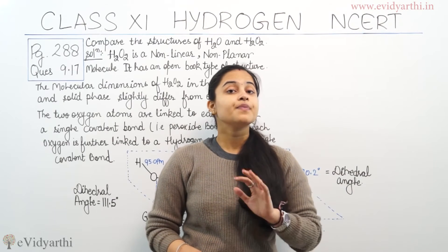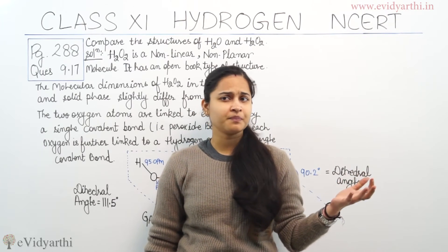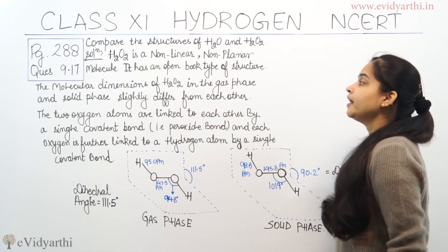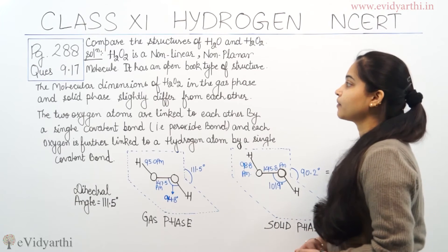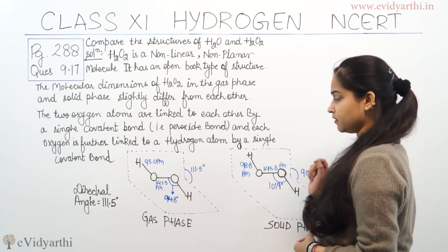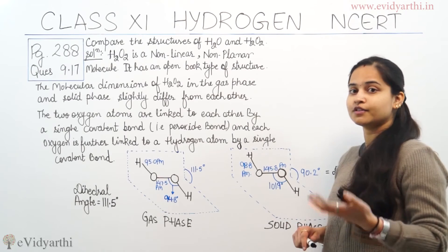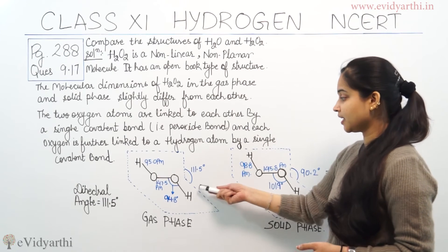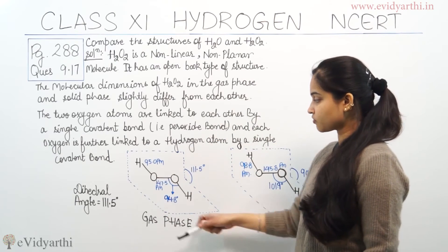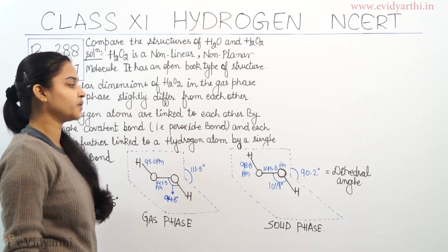In the gaseous phase, the dihedral angle is 111.5 degrees, and in the solid phase the dihedral angle is approximately 90.5 degrees. H2O2 is a non-linear, non-planar molecule with an open-book type structure. The molecular dimensions in the gas phase and solid phase differ slightly. The two oxygen atoms are linked by a single covalent bond — the peroxide bond — and each oxygen is further linked to a hydrogen atom by a single covalent bond. In the gas phase, the dihedral angle is 90.2 degrees.